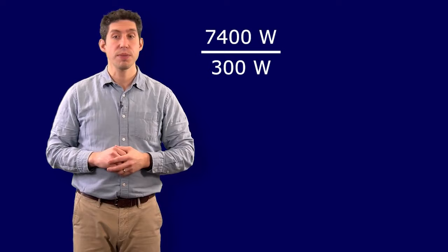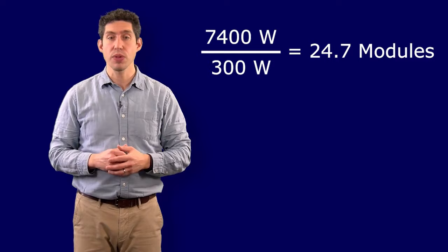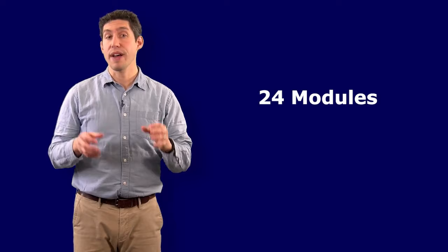We're going to start with the assumption that 7400 watts are required and we're using 300 watt photovoltaic modules. By dividing 7400 watts by 300 watts per module, we get 24.7 modules. Because we can't have a fractional module, we'll need to round down to 24 modules.